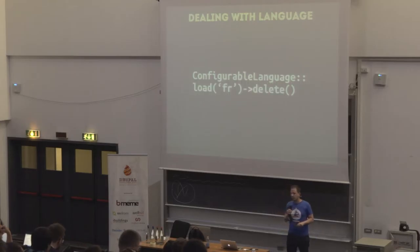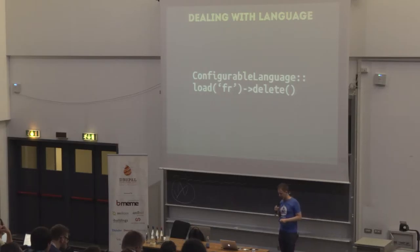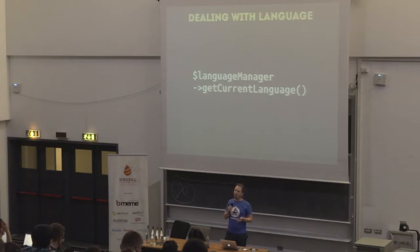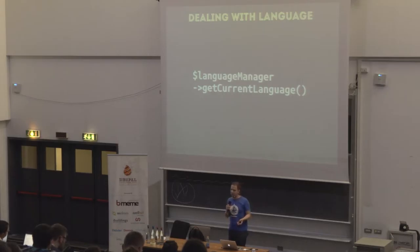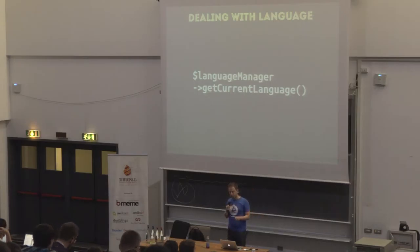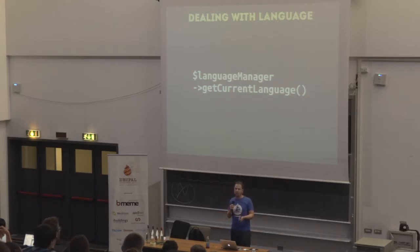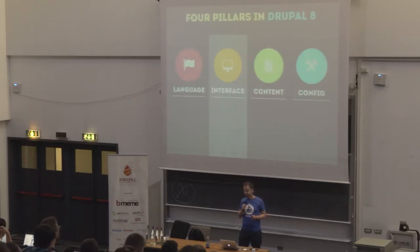You can also load a language by its langcode, its ID, then delete it or change its label. Once you have a list of languages, the language manager lets you pick from them. There's a language negotiation system in Drupal 8 that's slightly improved from Drupal 7. The language manager does language negotiation in getCurrentLanguage, going through the process you've configured and picking the right one for the request. If you want to programmatically use the language picked for the current request, use getCurrentLanguage on the language manager.